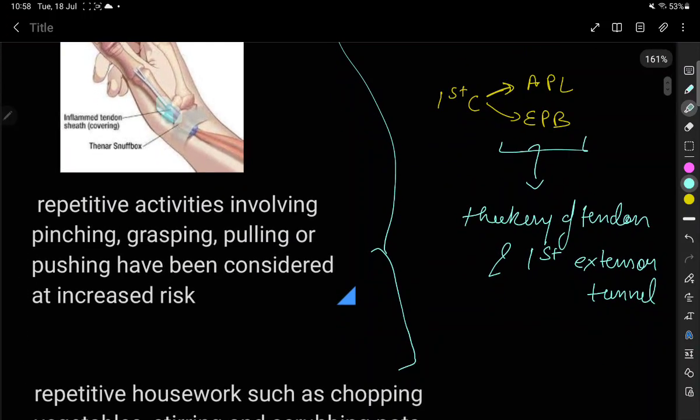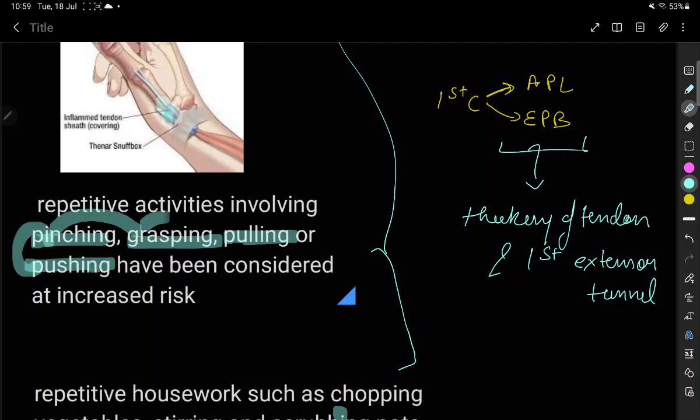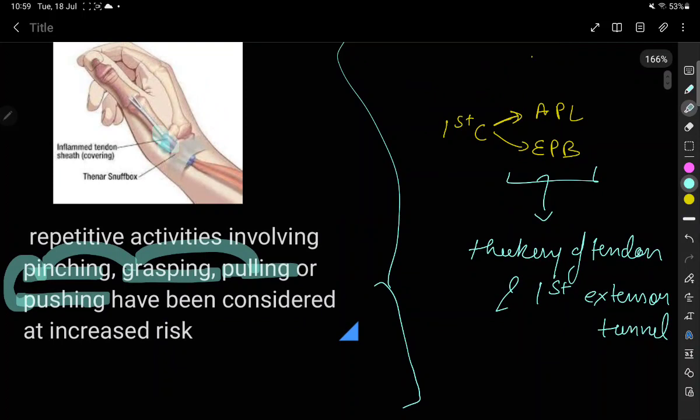We'll discuss the disease with a clinical case scenario. Someone has repetitive activities which involve pinching, grasping, pulling, and pushing. These activities involve two tendons of the thumb shown in this image: abductor pollicis longus and extensor pollicis brevis.